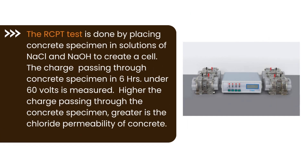The RCPT test is done by placing a concrete specimen in solutions of sodium chloride and sodium hydroxide to create a cell. The charge passing through the concrete specimen over 6 hours under 60 volts is measured. The higher the charge passing through the concrete specimen, the greater is the chloride permeability of the concrete.